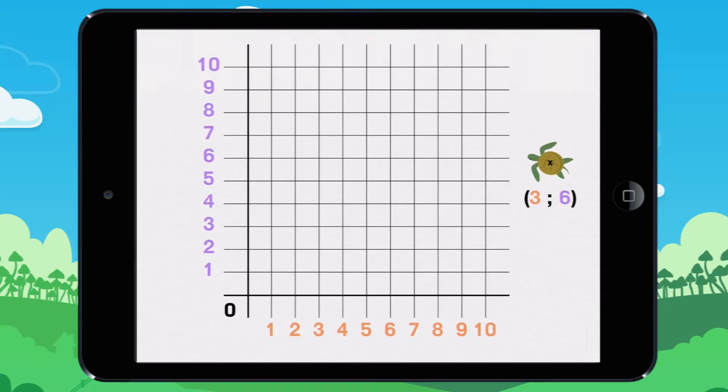I am going to show you how to plot the turtle on this graph. It says 3. The turtle is on line 3.